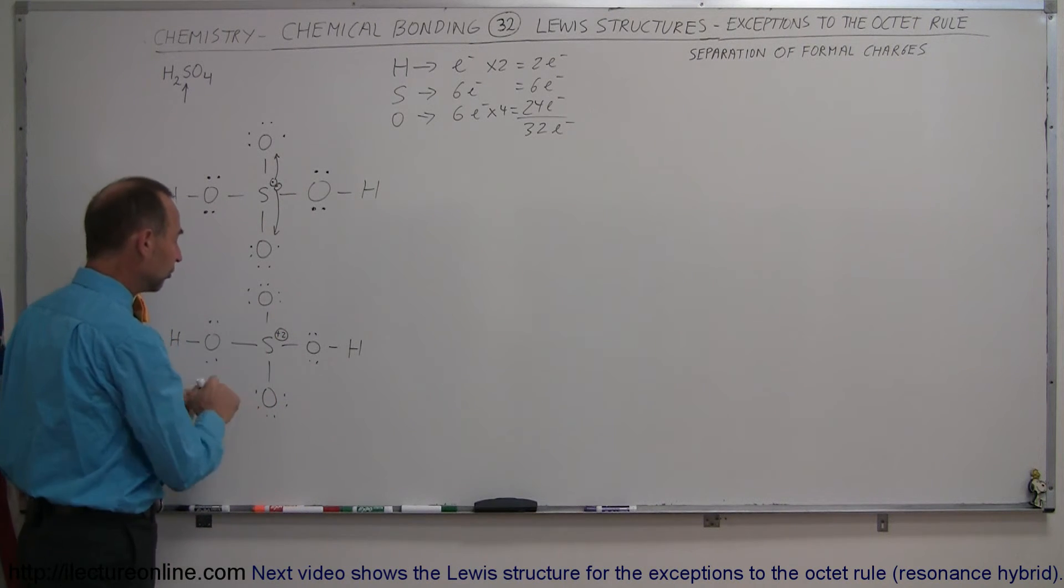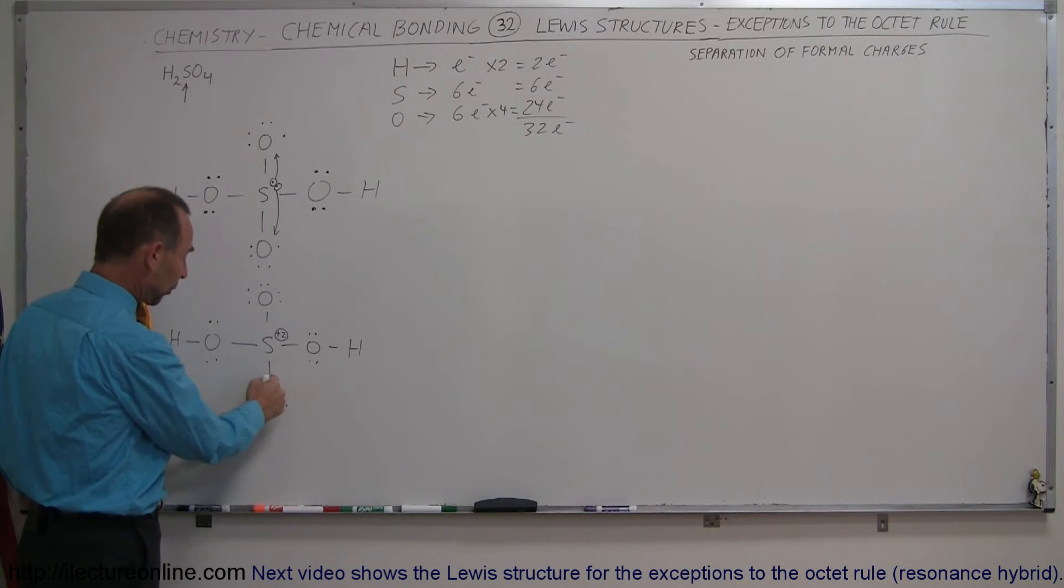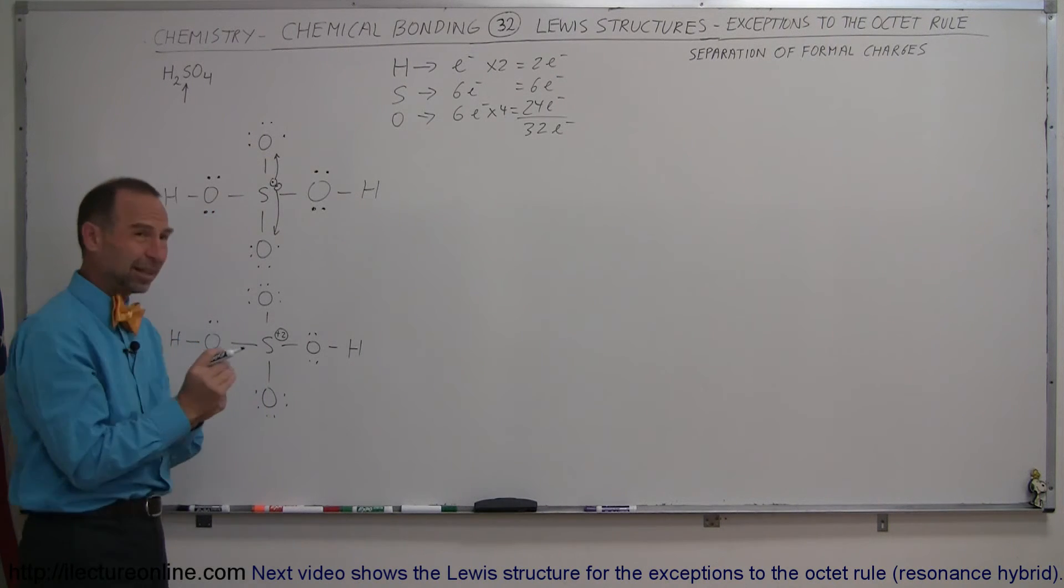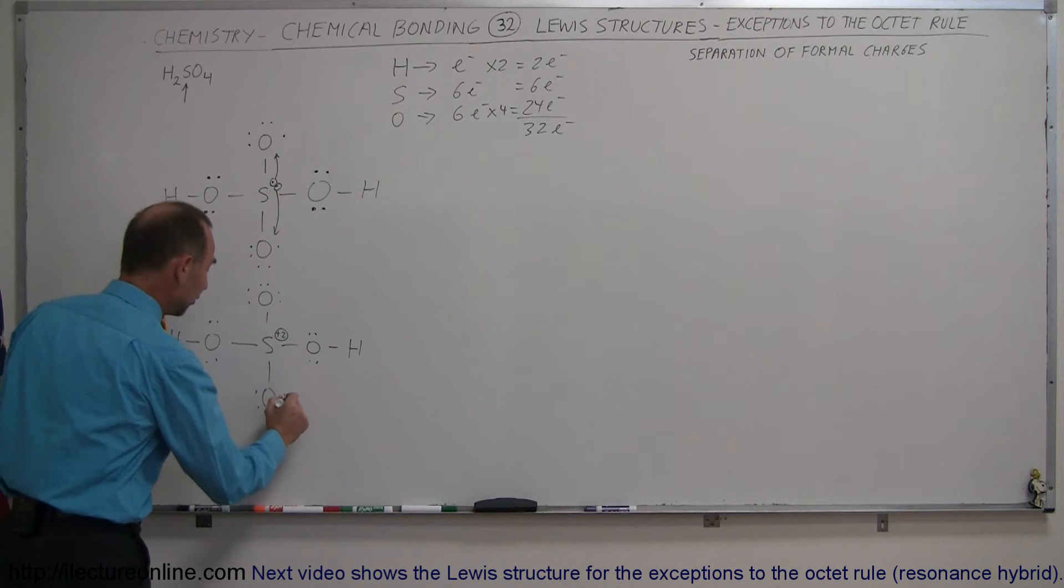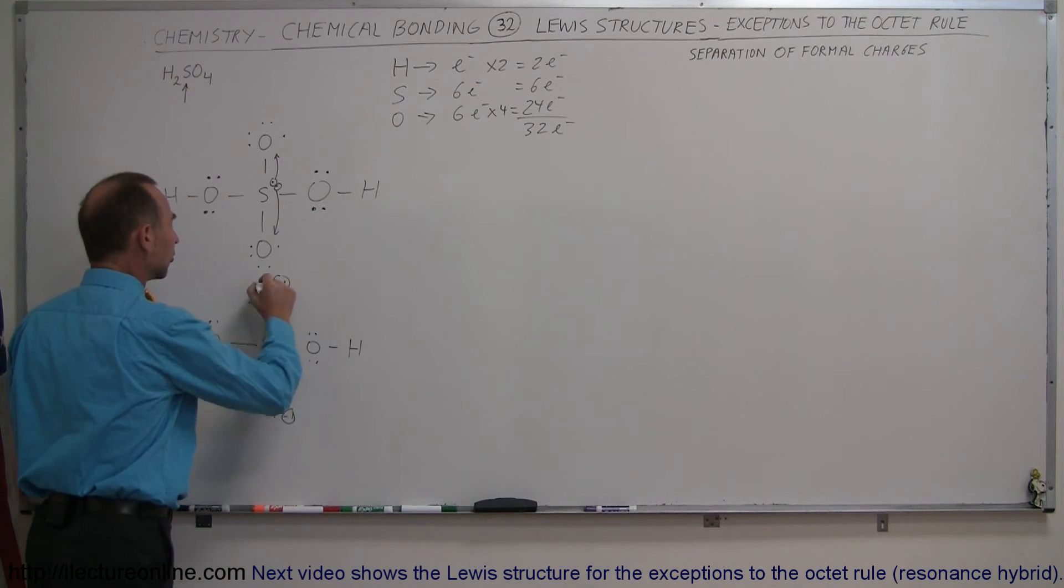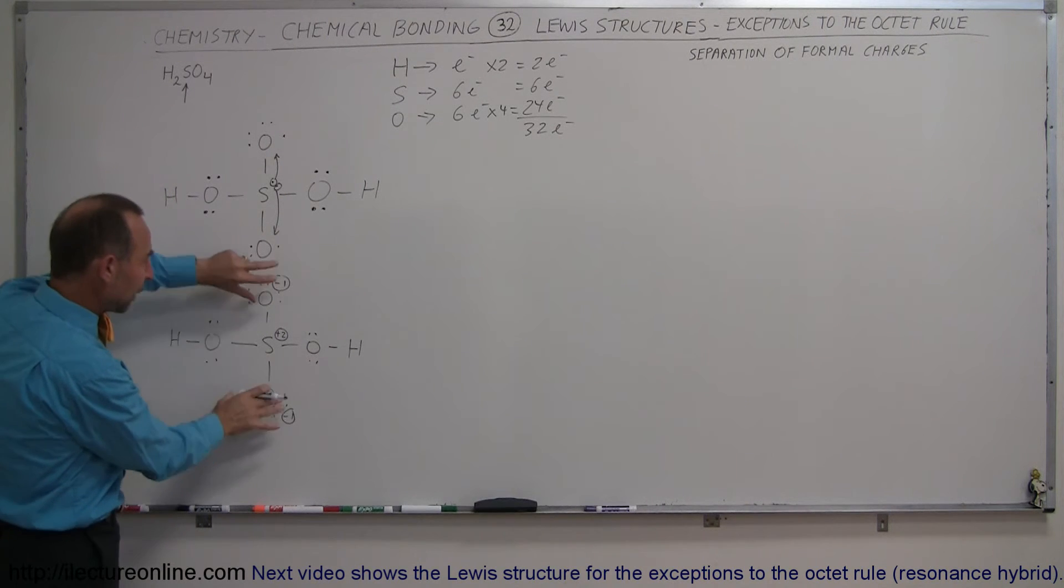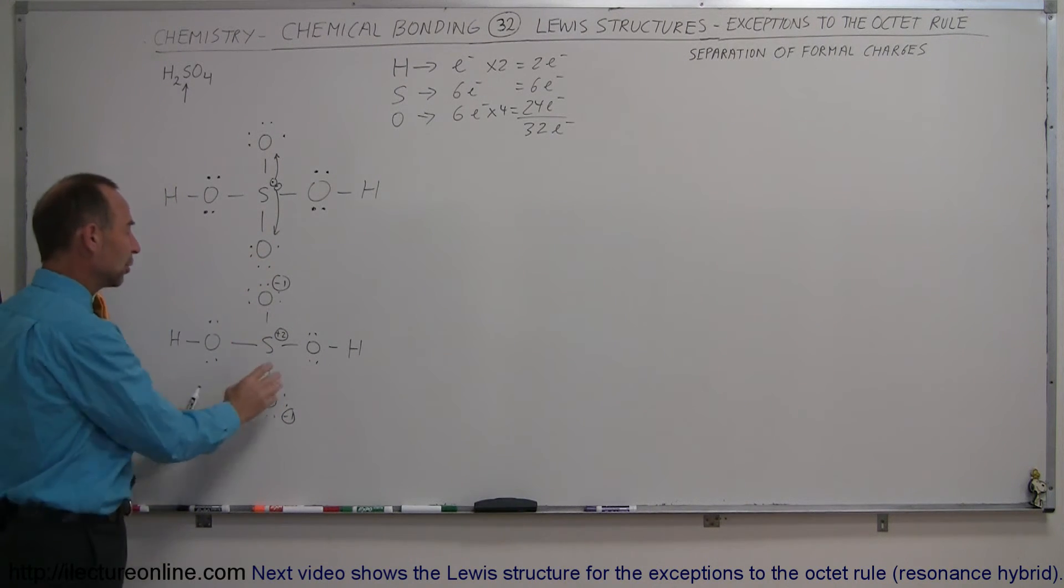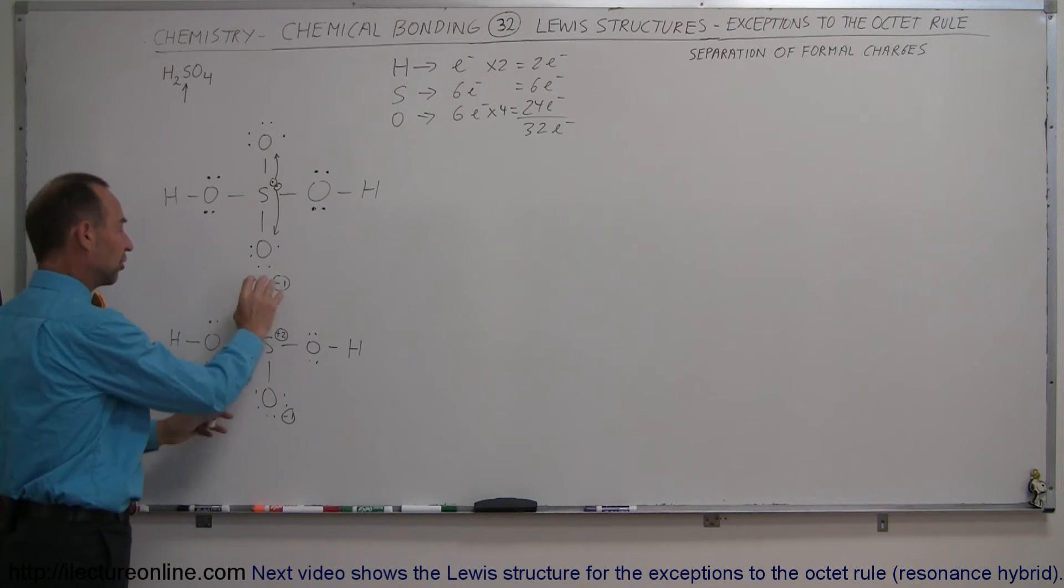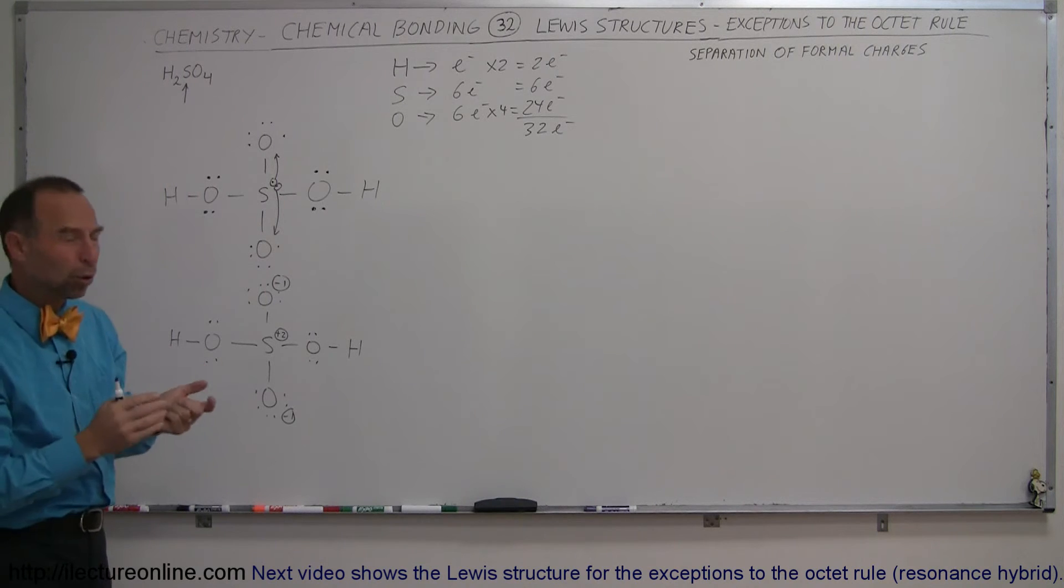And then look at these oxygens right here. Notice that they start out with six, but now they have six plus one in the bonding, so that's an extra electron than they normally wouldn't have, so these have a formal charge of minus one. So that's what we mean by formal charges. They're not real charges, but the fact that the electrons spend more time over here and less time over here would cause this to be more positive in charge and this to be more negatively charged. It's kind of like a polar molecule.